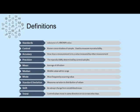Some common terminology used for Quality Assurance includes: standards, which are substances of a known value; a control, which is a known concentration of sample used to measure reproducibility; accuracy, which is how close a measurement is to a value measured by other measurement; precision, which is reproducibility determined by control samples; mean, which is the average of all values; median, which is the middle value within a range; and mode, which is the most frequently occurring value.